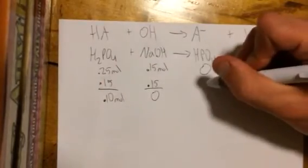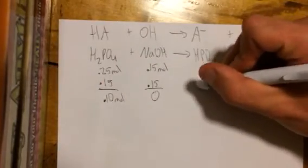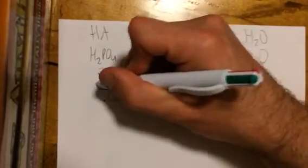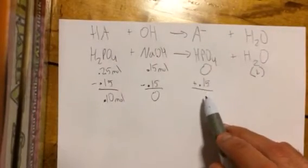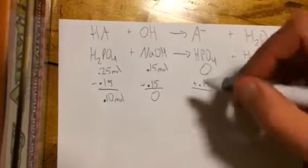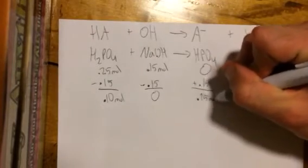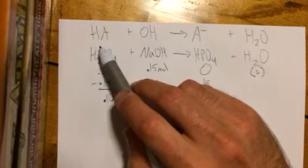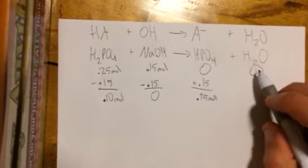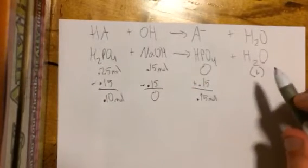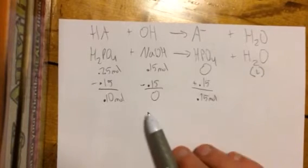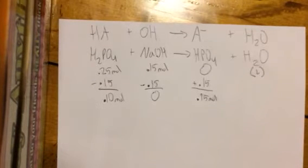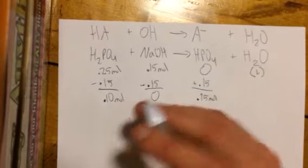So we're adding the NaOH, which will give us zero of course. And then we're adding NaOH to H2PO4, which leaves us with 0.10 still in moles. On this side we add the 0.15 here, we subtracted, and on this side we're going to add the 0.15, so that will give us 0.15 moles of the A minus, 0.10 moles of the HA.